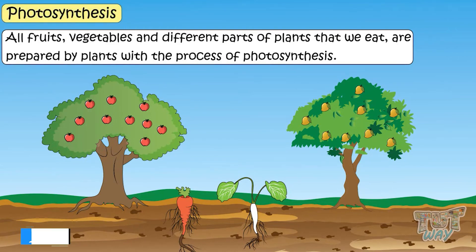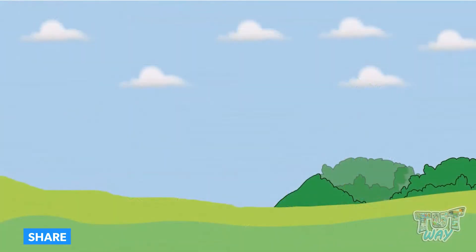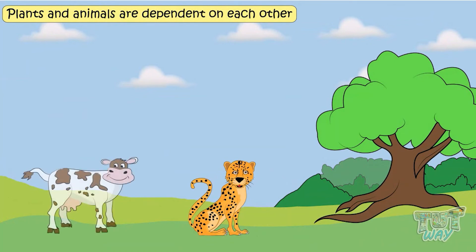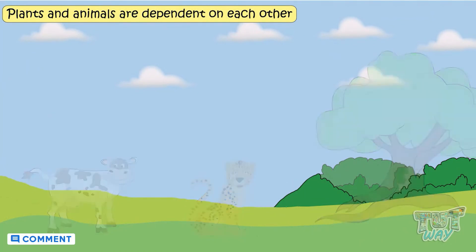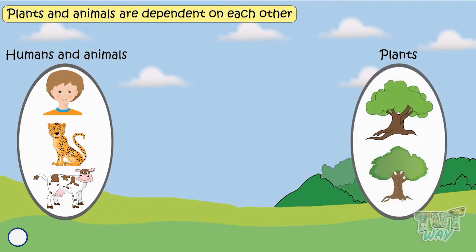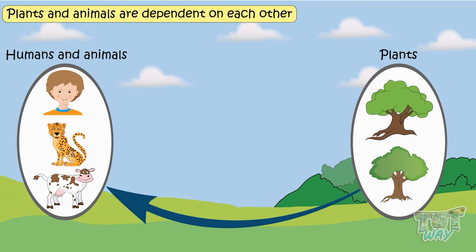Kids, do you know plants and animals are dependent on each other? All animals and humans need plants for their food and also for breathing, as plants provide oxygen which all living things need to breathe.